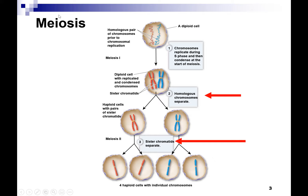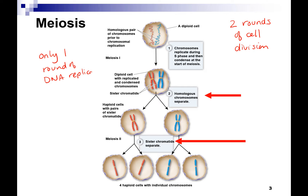A big difference between meiosis and mitosis is that there are two rounds of cell division. Mitosis just has one round. What's similar is there's only one round of DNA replication. So they both replicate DNA once, but meiosis is going to divide twice. This is called reduction division because you're reducing the number of chromosomes.